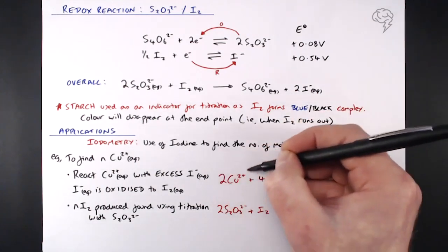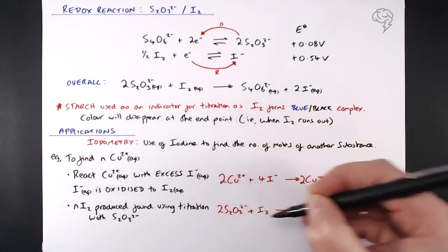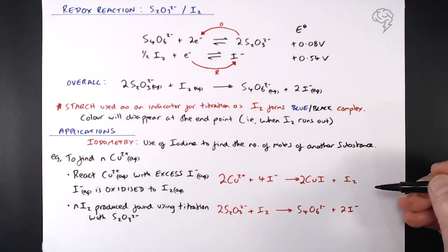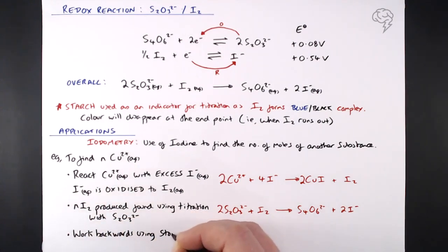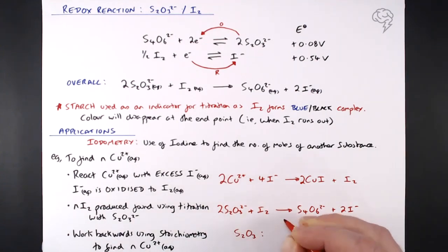then that's how many moles of iodine were produced in this initial reaction. And therefore, through stoichiometry, we can find how many moles of Cu2 plus we've got. So this is like, like I said, a back titration working backwards. Then we can use stoichiometry to find the number of moles of Cu2 plus in our original initial solution from that first reaction. So stoichiometry, we'll be looking at the number of moles of S2O3 2- relative to the number of moles of iodine that are reacted with, and then that number of moles of iodine relative to the number of moles of Cu2 plus.